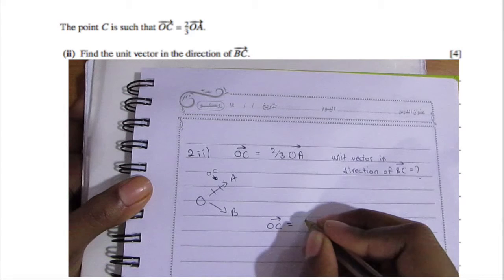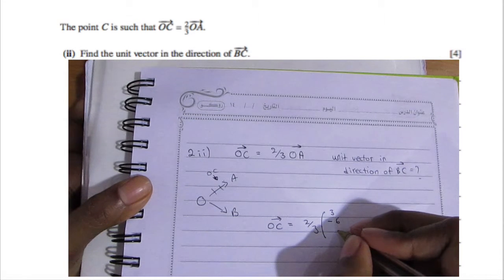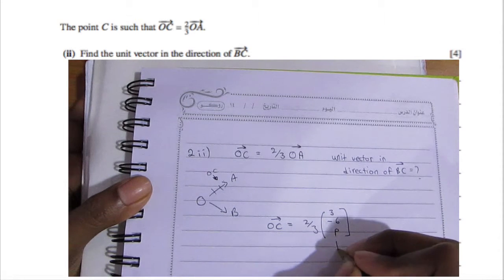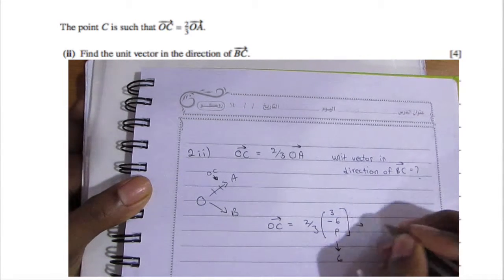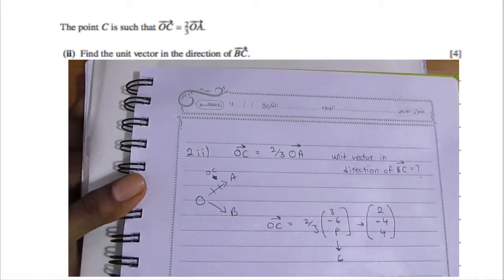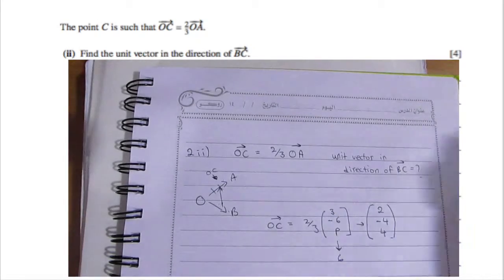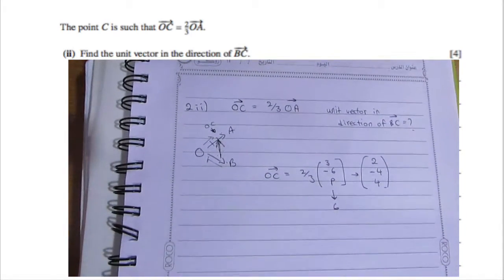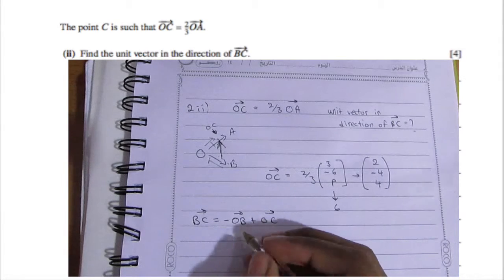OA = (3, −6, 6), so we multiply by 2/3 to get OC = (2, −4, 4). To find vector BC, we go from B to O then O to C, so we reverse OB to get BO and then add OC. Reversing OB flips the signs, then adding OC gives BC = (0, 2, 11).